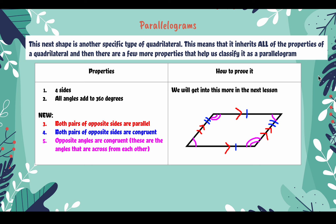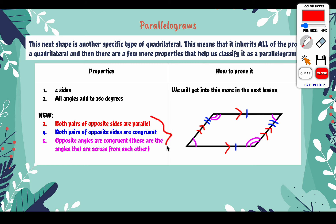Be careful — you can't just look at a shape and assume these properties. The question will have to tell you it's a parallelogram in order for you to use any of these three properties, or if you're doing a proof and you can conclude that you have a parallelogram. You can't just see a four-sided figure that looks like this and assume it's a parallelogram.